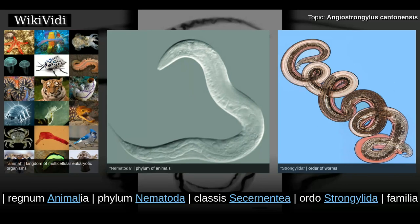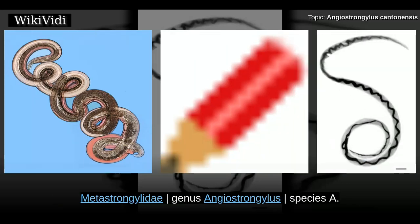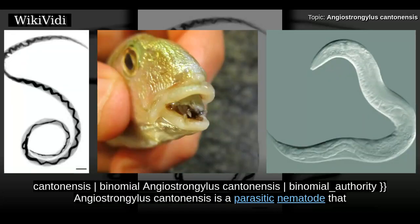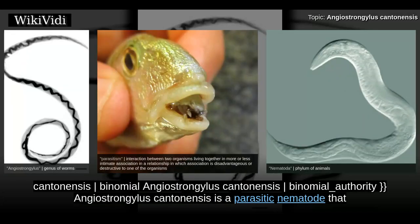Taxonomy: Regnum Animalia, Phylum Nematoda, Class Secernentea, Order Strongylida, Family Metastrongylidae, Genus Angiostrongylus, Species A. cantonensis. Binomial name: Angiostrongylus cantonensis.